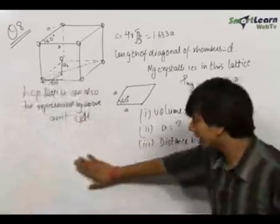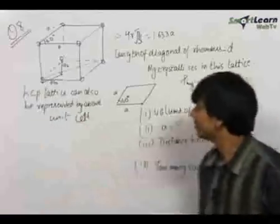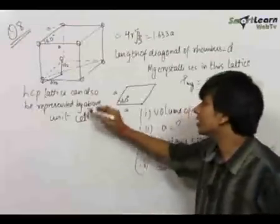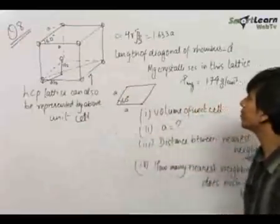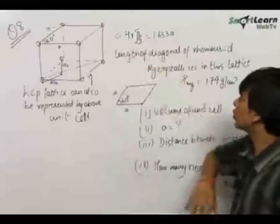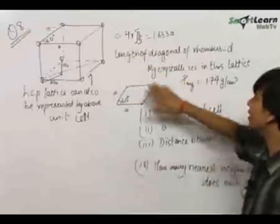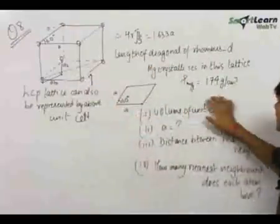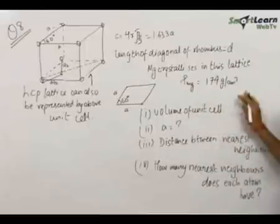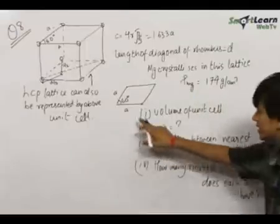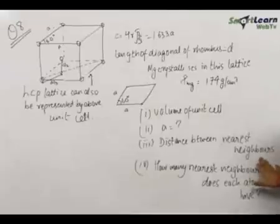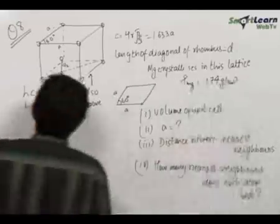The 8th question is a very important and interesting question. We have been given that an HCP lattice can also be represented by a particular unit cell, where C is equal to 4r√(2/3), the length of the diagonal of the rhombus is d, and the density of magnesium is given. We need to find the volume of the unit cell, the unit cell length, the distance between nearest neighbours, and how many nearest neighbours each atom has.